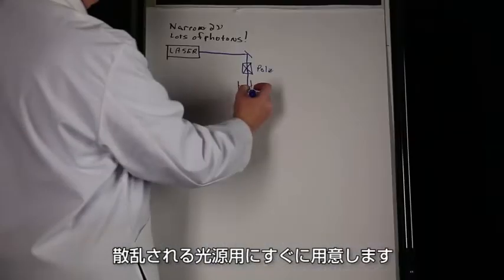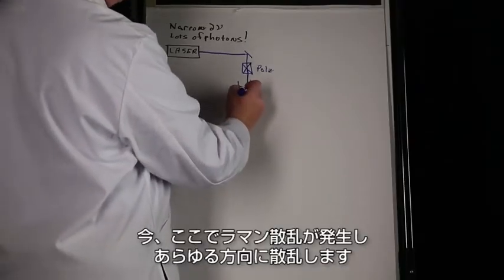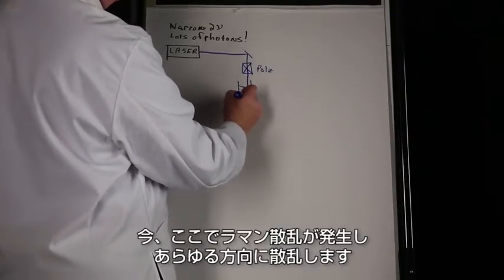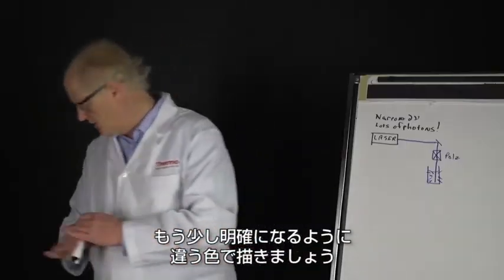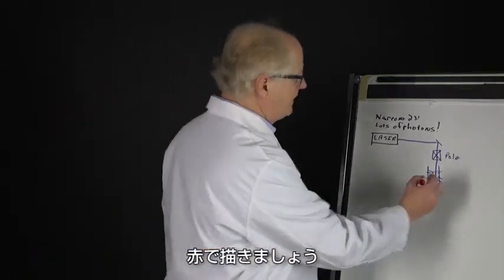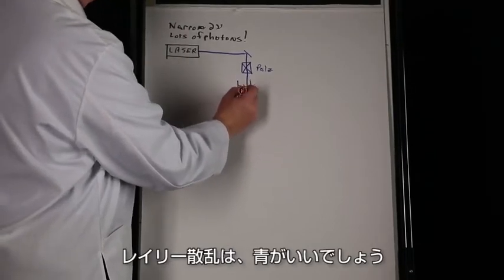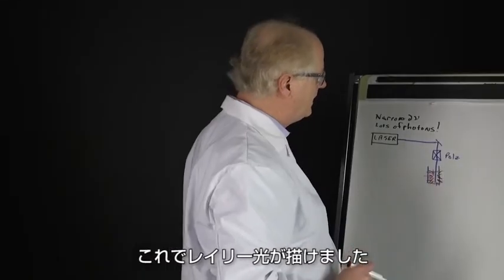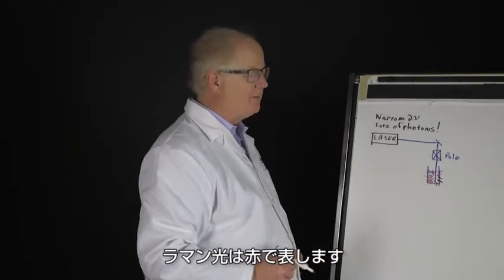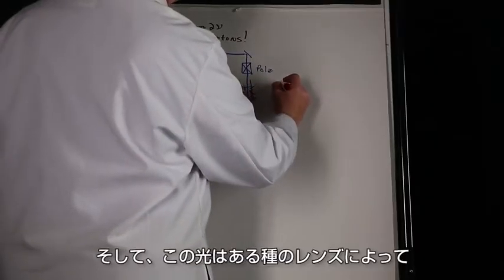So now the Raman scatter is going every which way out here. Let's draw it in a different color so it's a little bit clearer - we'll draw in red. The blue represents the Rayleigh light conveniently enough, so we have the Rayleigh light and we have the Raman light in red.